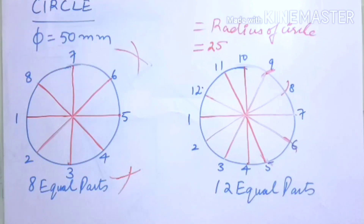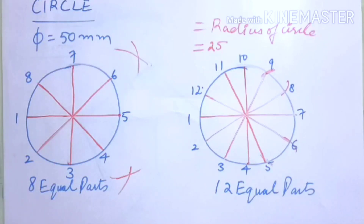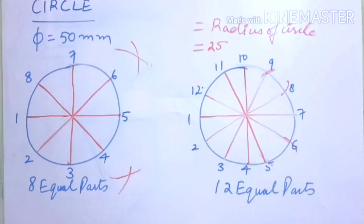Drawing these polygons is very important because if you know how to draw these true shapes — pentagon, hexagon, triangle, and circle — only then will you be able to draw the actual projections of planes. These may seem easy, but they are equally important.